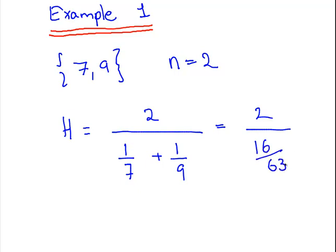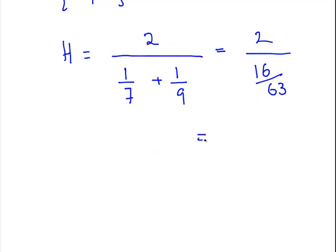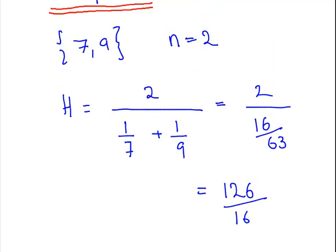And we can go a little bit further there. We can multiply above and below the numerator and the denominator by 63, so we get 126 over 16. You can work that out in your calculator.